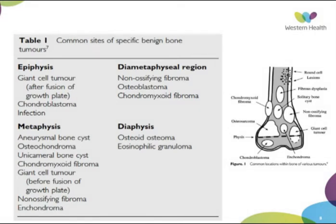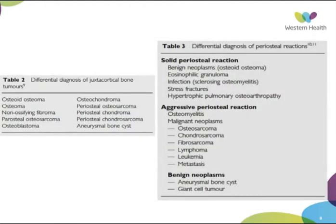This is a good table to remember for exam purposes. Epiphyseal lesions are usually a GCT or chondroblastoma depending on patient age. In the metaphysis it's usually an ABC — aneurysmal bone cyst — or a UBC, unicameral bone cyst, also called simple bone cyst, and non-ossifying fibroma or fibrous cortical defect. Many of these lesions have multiple names for the same thing and you just have to learn them all. For diaphyseal lesions, the most common we see are osteoid osteoma and eosinophilic granuloma.